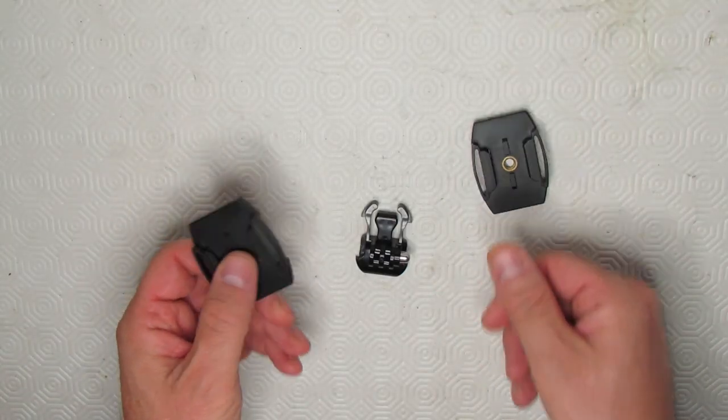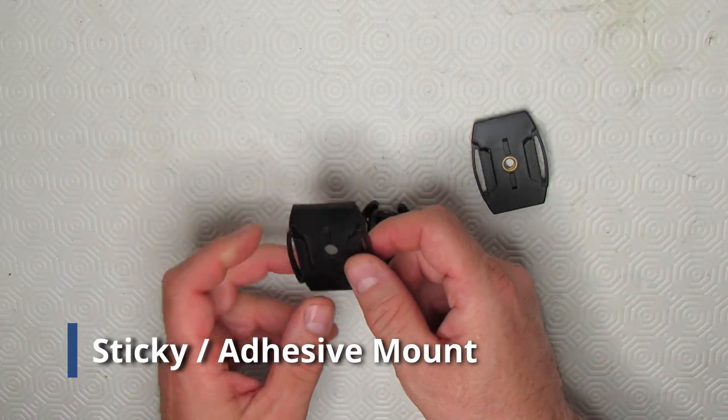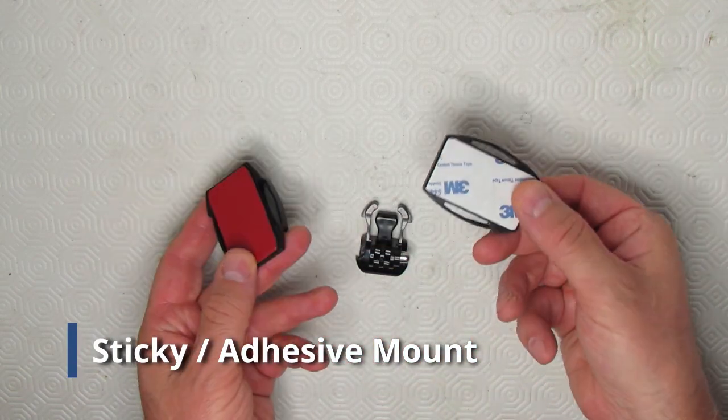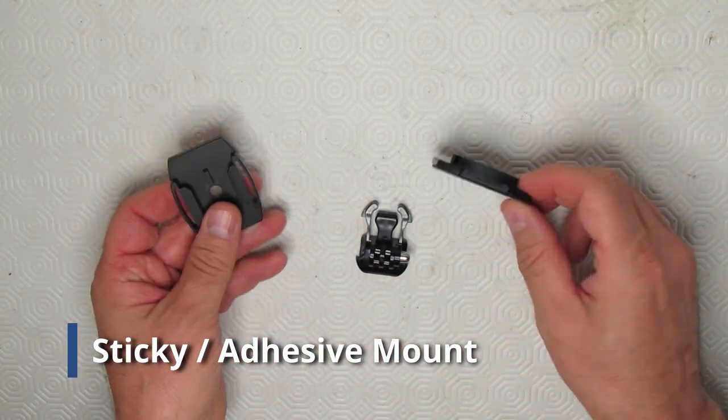Here are the first set of mounts we're going to discuss. These are called adhesive mounts but affectionately known in the action camera world as the sticky mount. And that's because the backs here, you peel this off and stick it down to wherever you want.